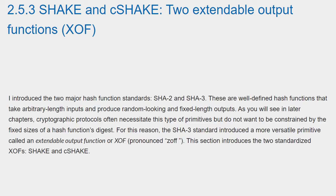To summarize, I introduced the two major hash function standards, SHA-2 and SHA-3. These are well-defined hash functions that take arbitrary length inputs and produce random-looking, fixed-length outputs. As you will see in later chapters, cryptographic protocols often necessitate this type of primitive but do not want to be constrained by the fixed sizes of a hash function's digest. For this reason, the SHA-3 standard introduced a more versatile primitive called an Extendable Output Function, or XOF, pronounced ZOF. This section introduces the two standardized ZOFs: SHAKE and CSHAKE.